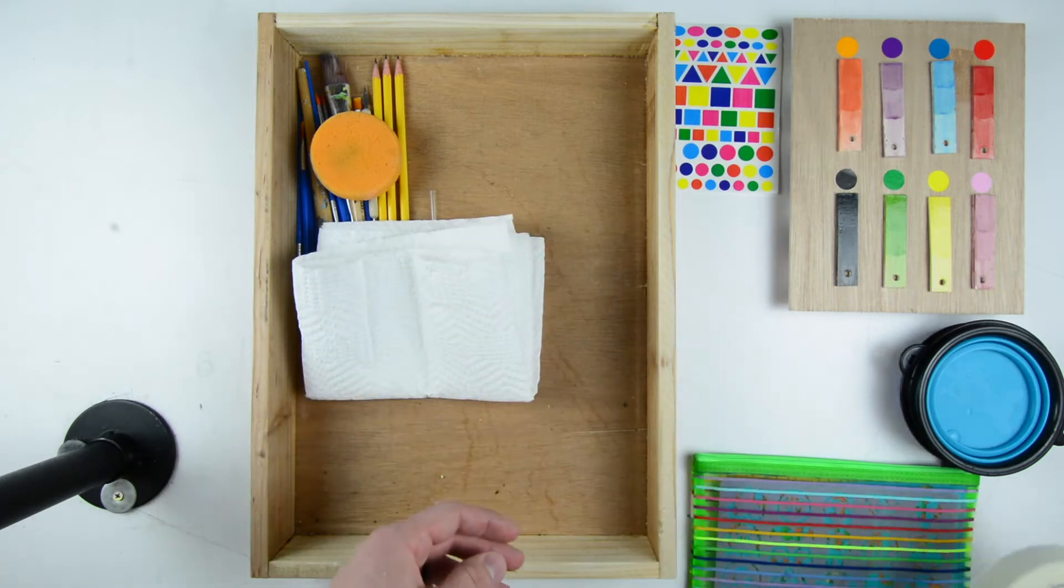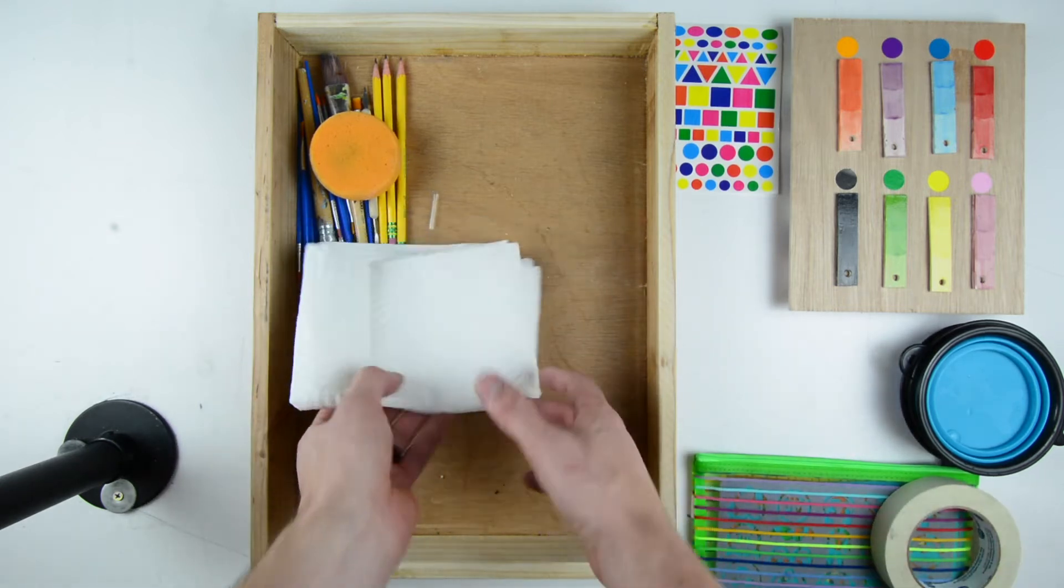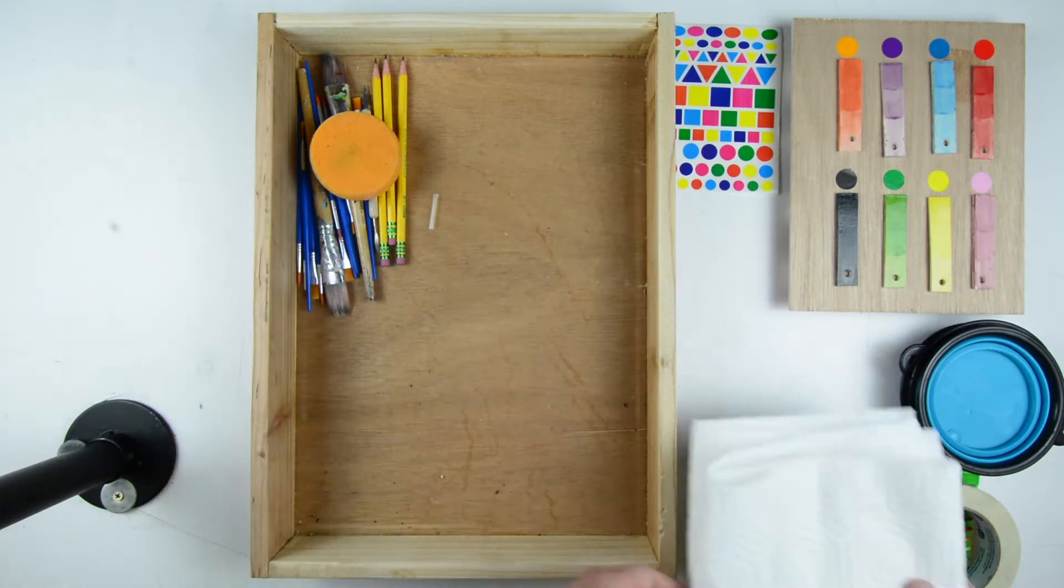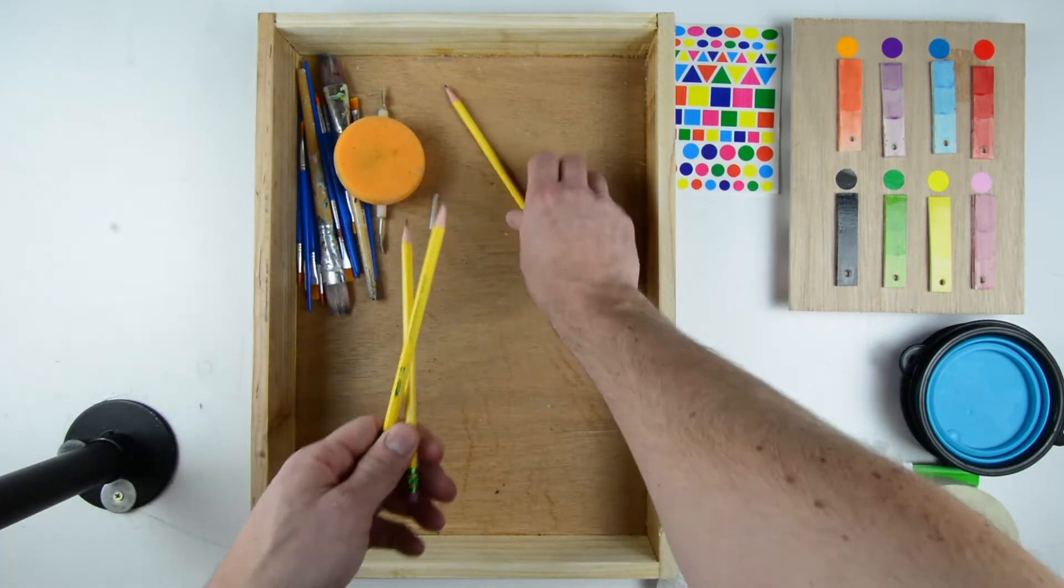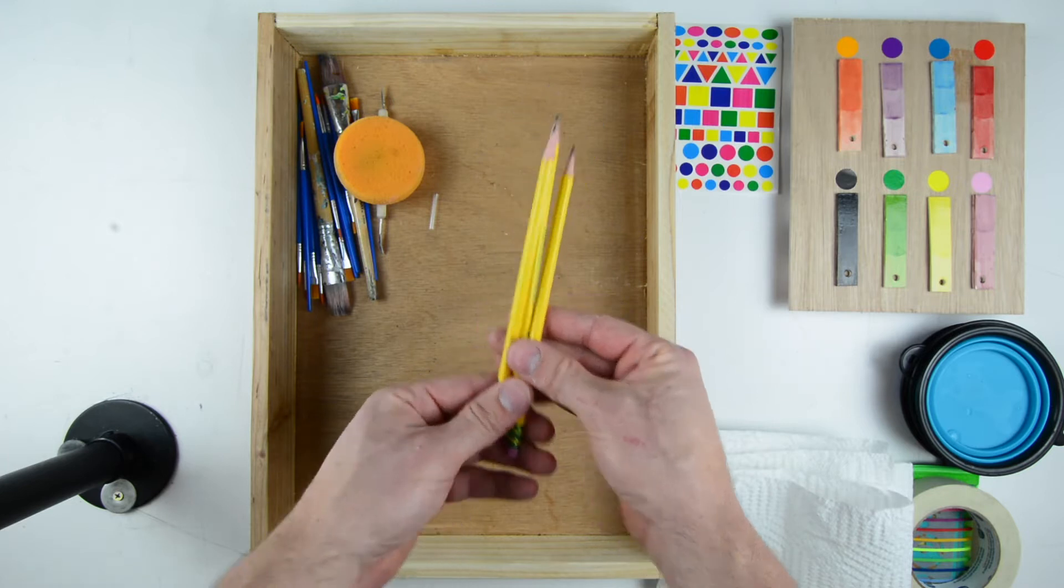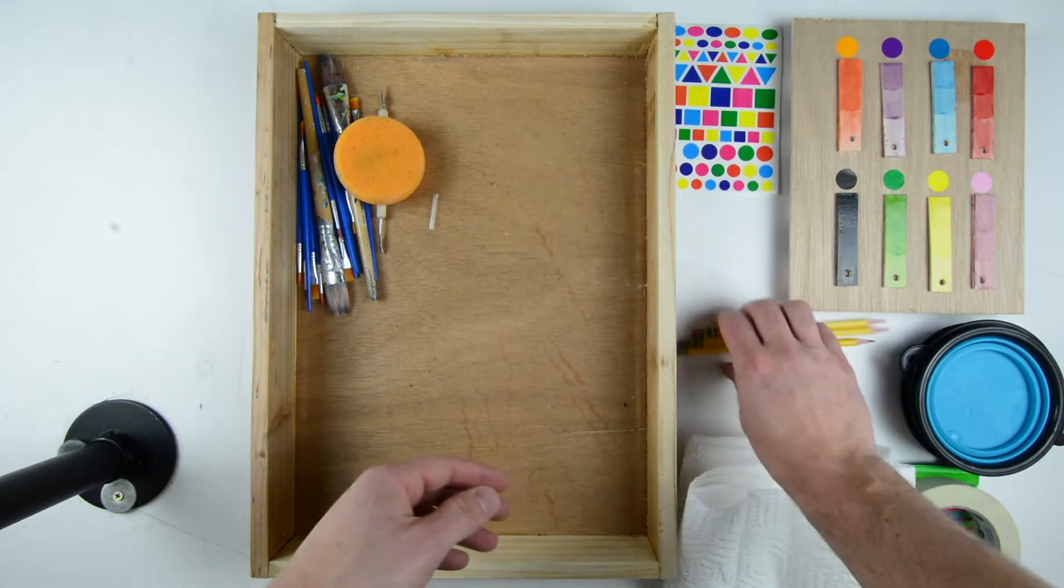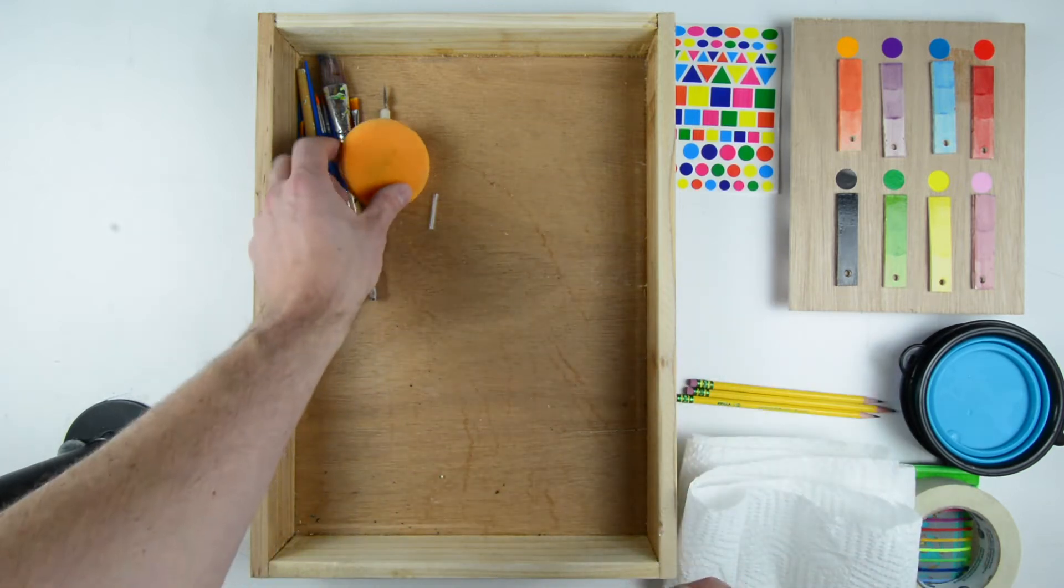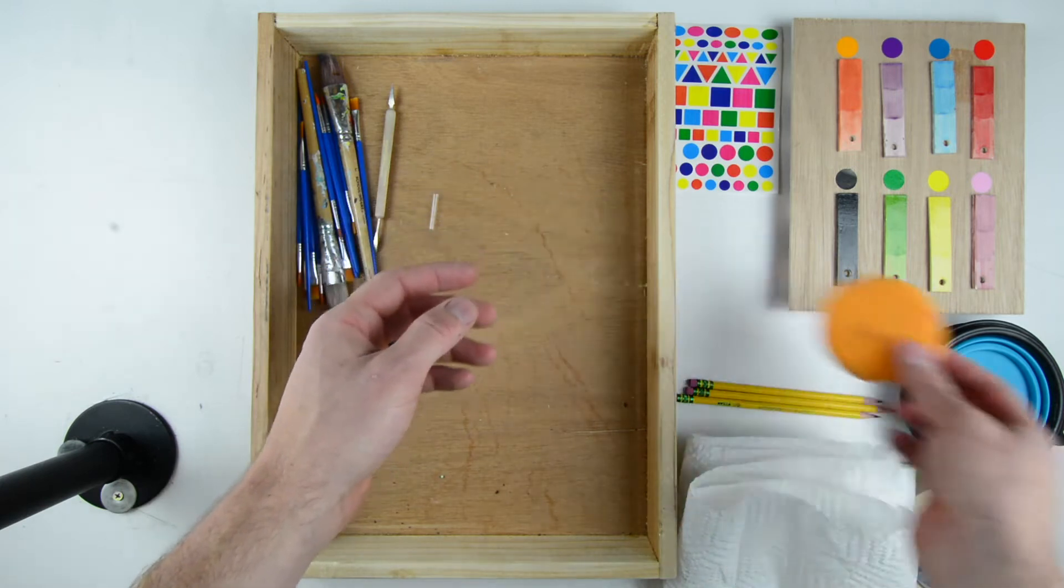Masking tape to mask certain areas of your piece, paper towel to dry your brushes on and clean small spills, pencils for drawing designs onto your piece, and a sponge to fix any large painting mistakes.